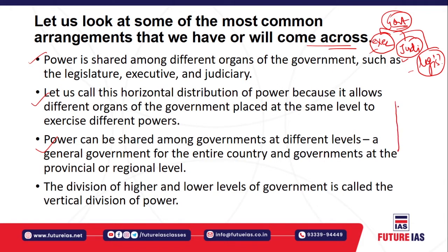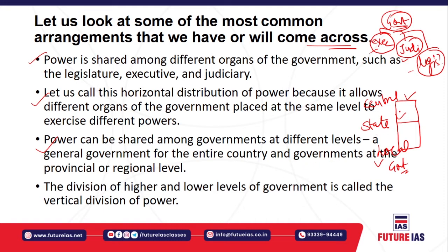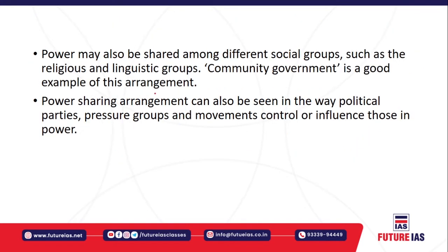In vertical division of power, different tiers of government exist: the central government at the top, then state governments, then local governments. The division of power between the central government, state government, and local government — at different levels — is known as vertical division of power. It refers to the division between higher and lower levels of government.